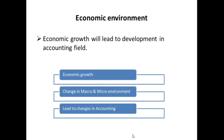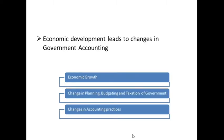When the environment changes, that will lead to changes in accounting policy as well. Economic development leads to changes in government accounting. When economic growth takes place, there is always change in accounting as well as government accounting. Government planning, five-year plans, government budgets, and taxation policies are all influenced by changes in the economy. Due to the pandemic, a lot of changes in government plans and budgets have taken place. Similarly, when GST was introduced, there were a lot of changes in plans, budgets, and taxation policy.